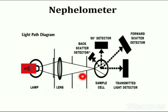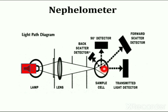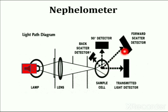The instrumentation of a nephelometer contains a light source, filter, lens, sample cell, and detector. A photomultiplier tube detector is used as a receiver, which is mounted on a turntable and may be positioned at any desired angle from 0 degrees to 180 degrees relative to the exit beam.